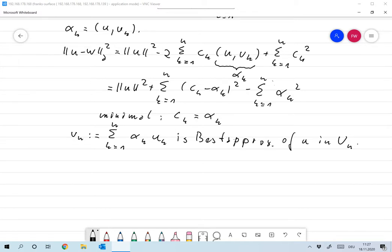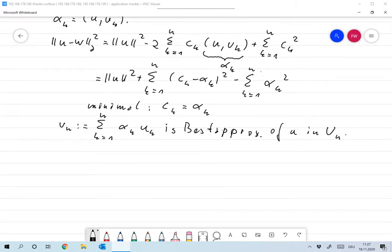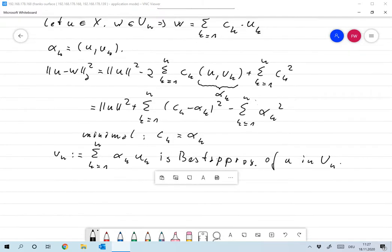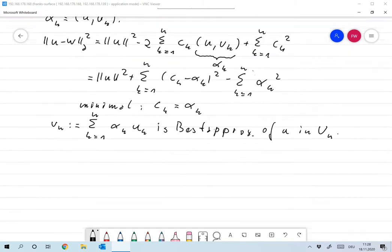So that means that VN defined as the sum from 1 to N alpha K UK is the best approximation of U in UN. So in particular, norm of U minus VN is less than or equal to norm of U minus W for any W in UN.